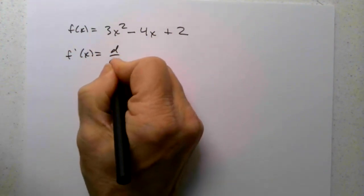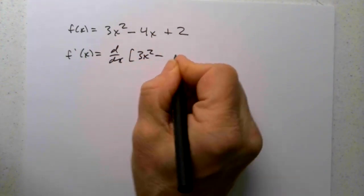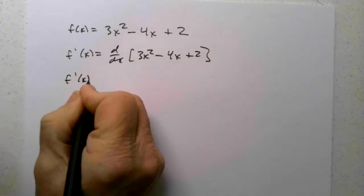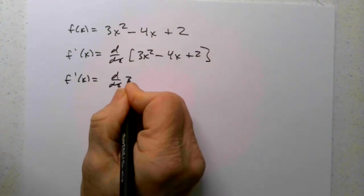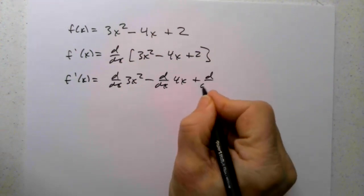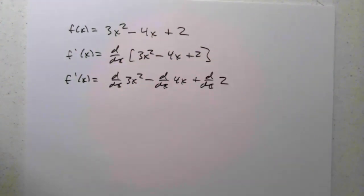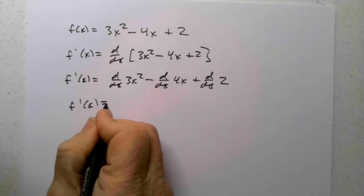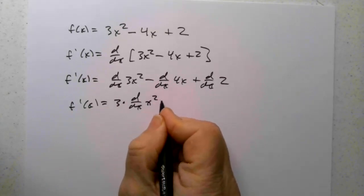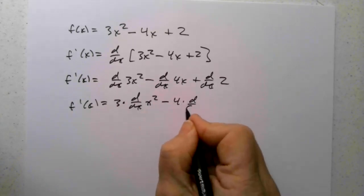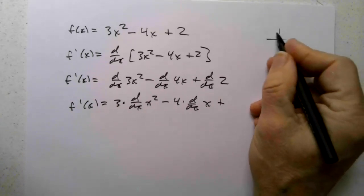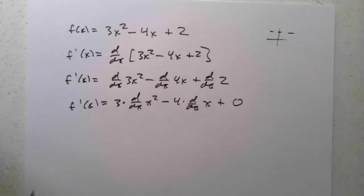So f prime of x is the derivative with respect to x of 3x squared minus 4x plus 2. We split this as the derivative of 3x squared, minus the derivative of 4x, plus the derivative of 2. Remember, a constant function is horizontal, its slope is 0, so the derivative of a constant is 0.